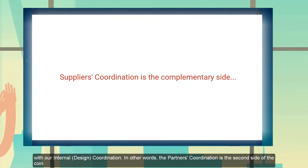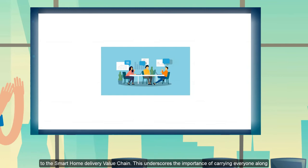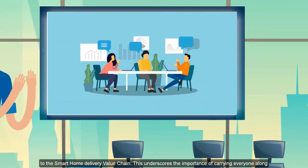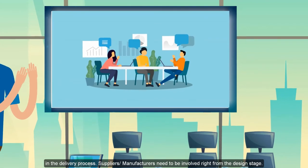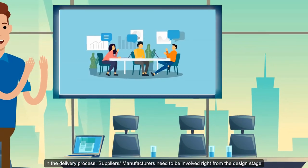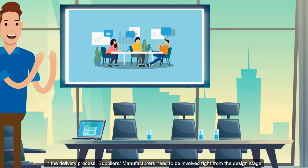The supplier's coordination is the second side of the coin to the entire operation. This goes ahead to underscore the importance of carrying everybody along in the smart shop delivery, including the suppliers and the manufacturers, as early as the design stage of the project. This shows you the importance of external coordination.